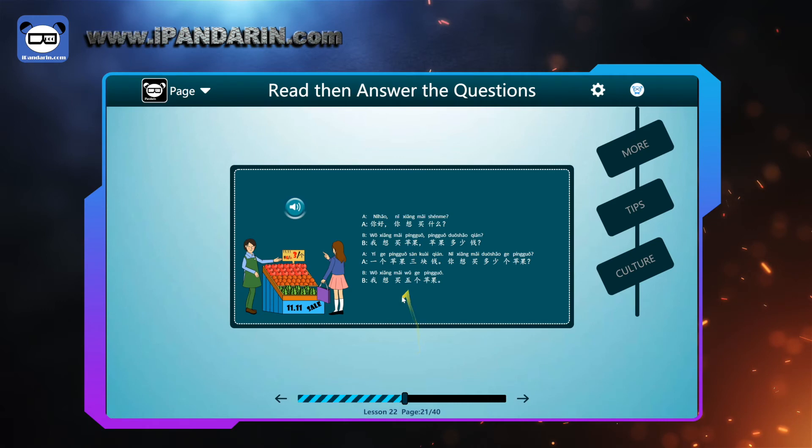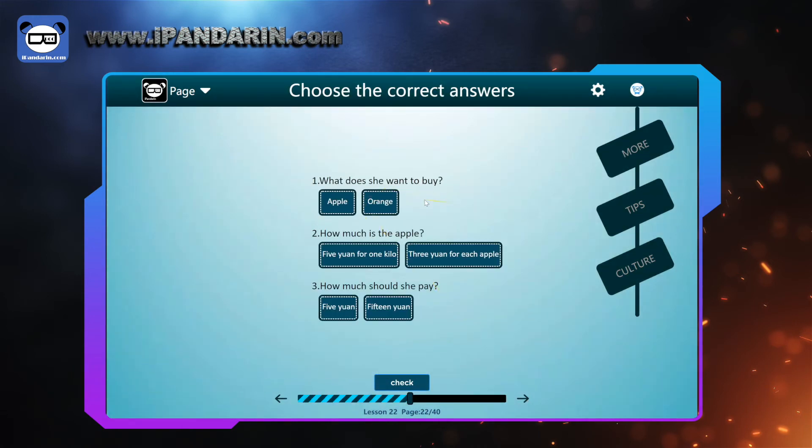Let's go back to go through the text. 你好，你想买什么? Hello, what do you want to buy? 我想买苹果. I want to buy apple. 苹果多少钱? How much is the apple? 一个苹果三块钱. 你想买多少个苹果? One apple is three yuan. How many apples do you want to buy? 我想买五个苹果. I want to buy five apples. Okay. What does she want to buy? 苹果, apple.